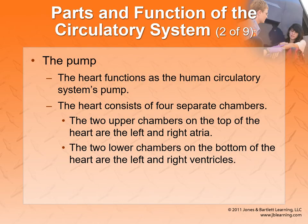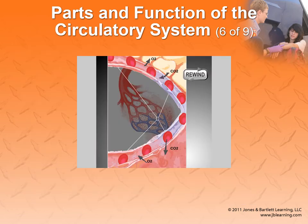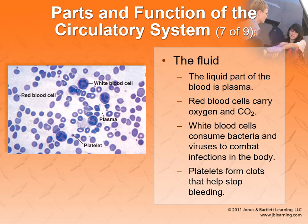We break everything down to the pump, the pipe, and the fluid. Starting with the pump, that is our heart — we have the atrium on top and ventricles beneath it. The pipes are arteries and veins, including the capillaries. Then there's the fluid, which is going to be blood. All types of shock come down to a problem with one of those three things.